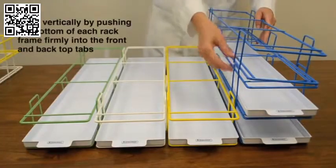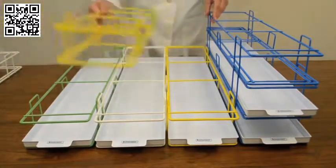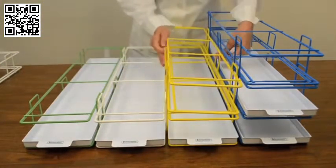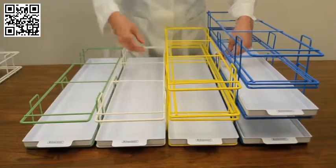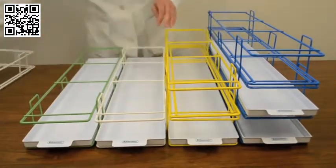To build vertically, work on a slight angle and push the bottom of the upper rack frame so that the front and back tab areas press into the front and back tabs of the lower rack frame. This is a friction fit and very secure.